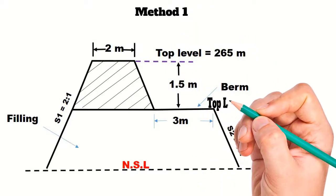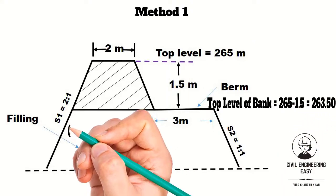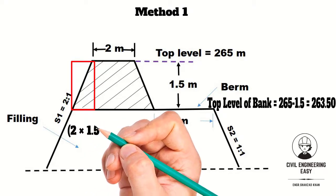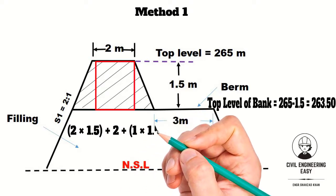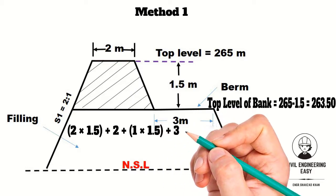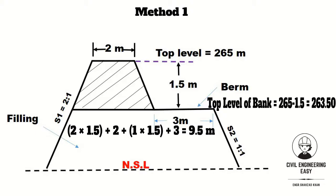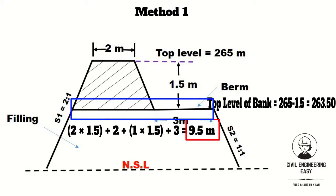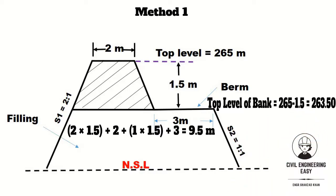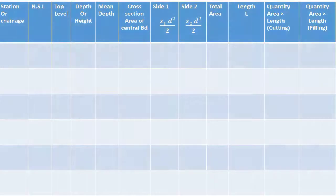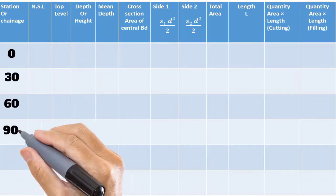Solving by the first method: the top level of the bank is 265 minus 1.5, equal to 263.5 meters. The top width of the bank equals 2×1.5 (side slope 2, depth 1.5) plus 2 (bank width) plus 1×1.5 (side slope 1, depth 1.5) plus 3, giving 9.5 meters. The side slope on one side is 2:1 and on the other side is 1:1. Draw the table and fill in the chainages: 0, 30, 60, 90, 120, and 150.